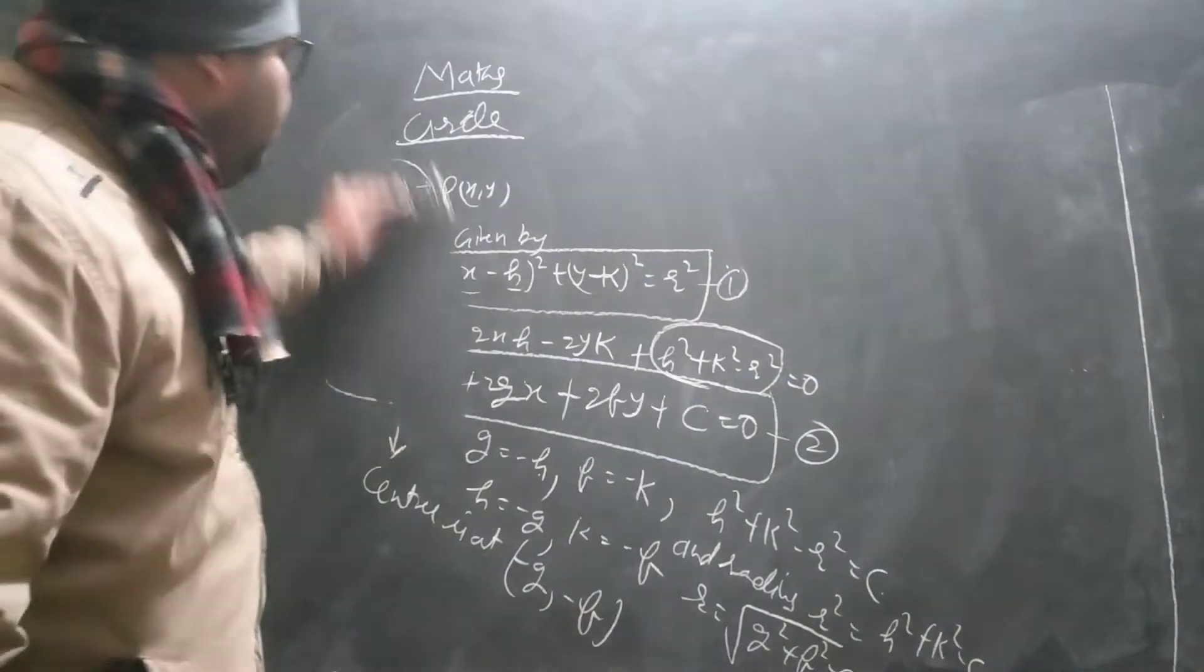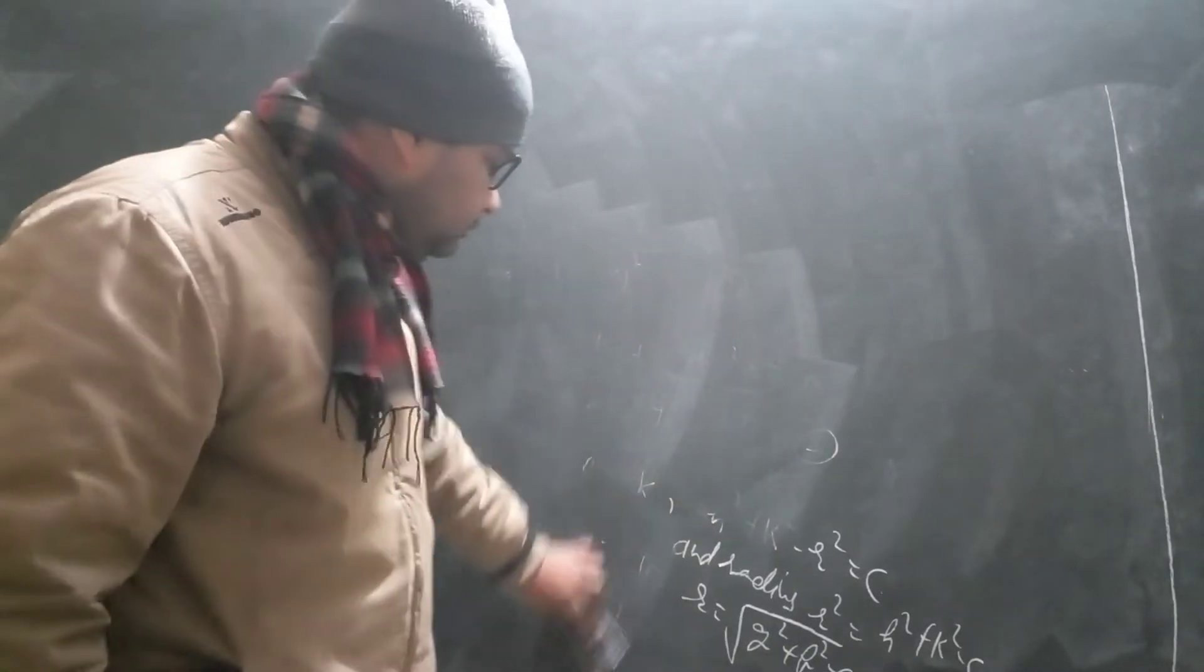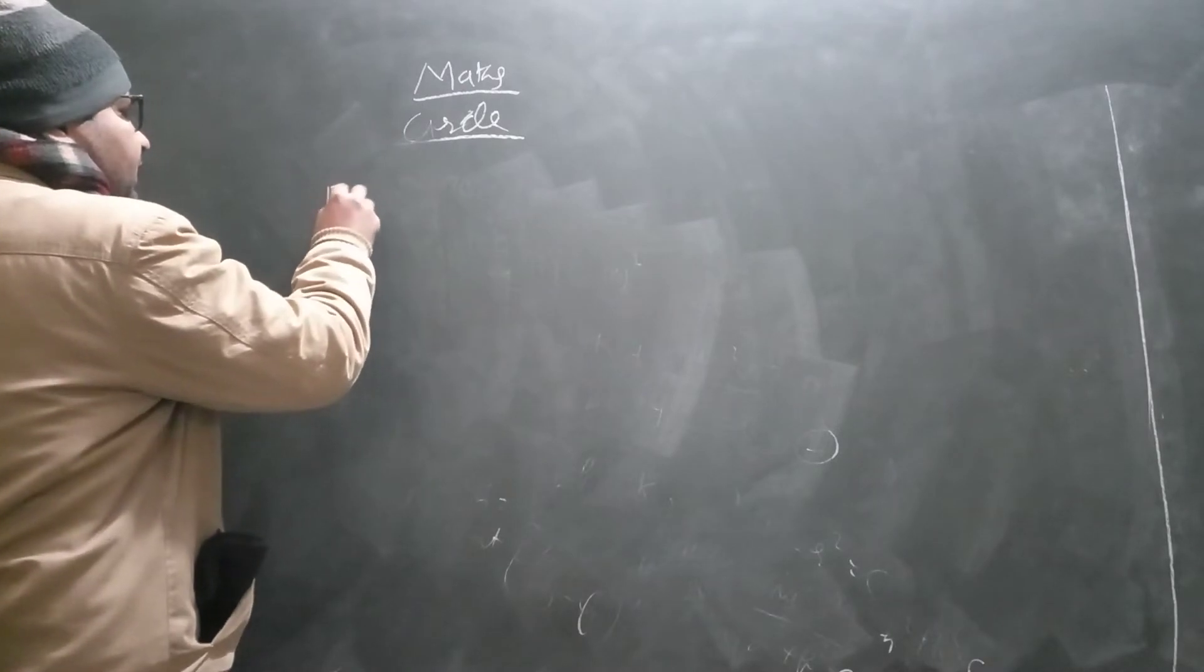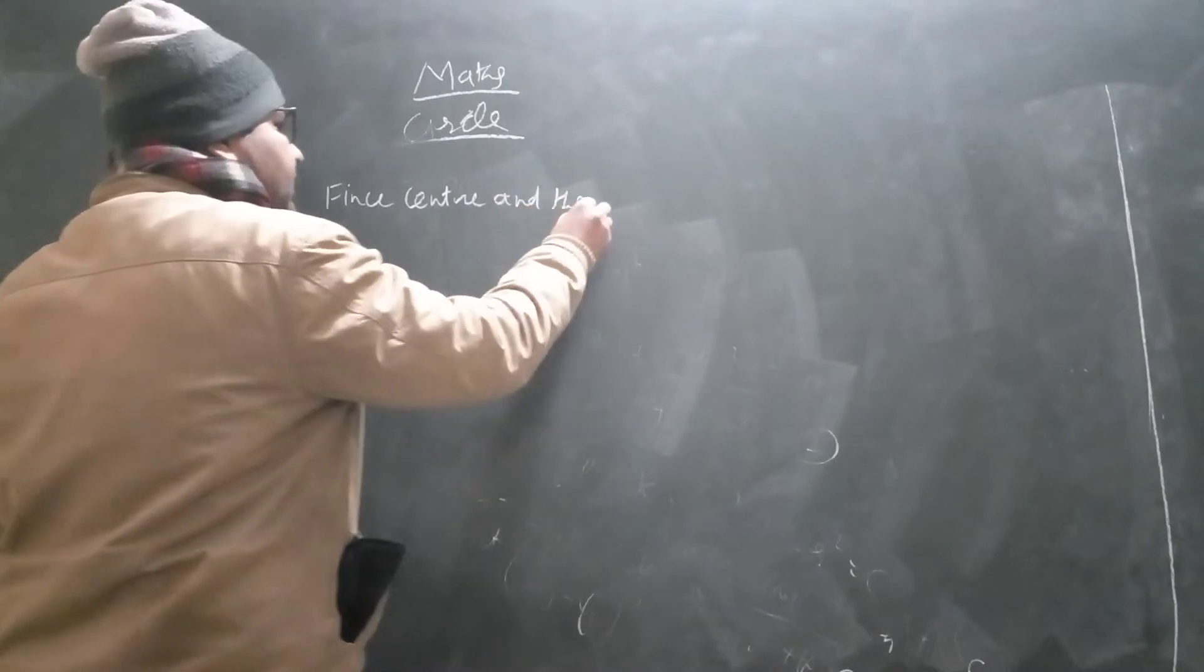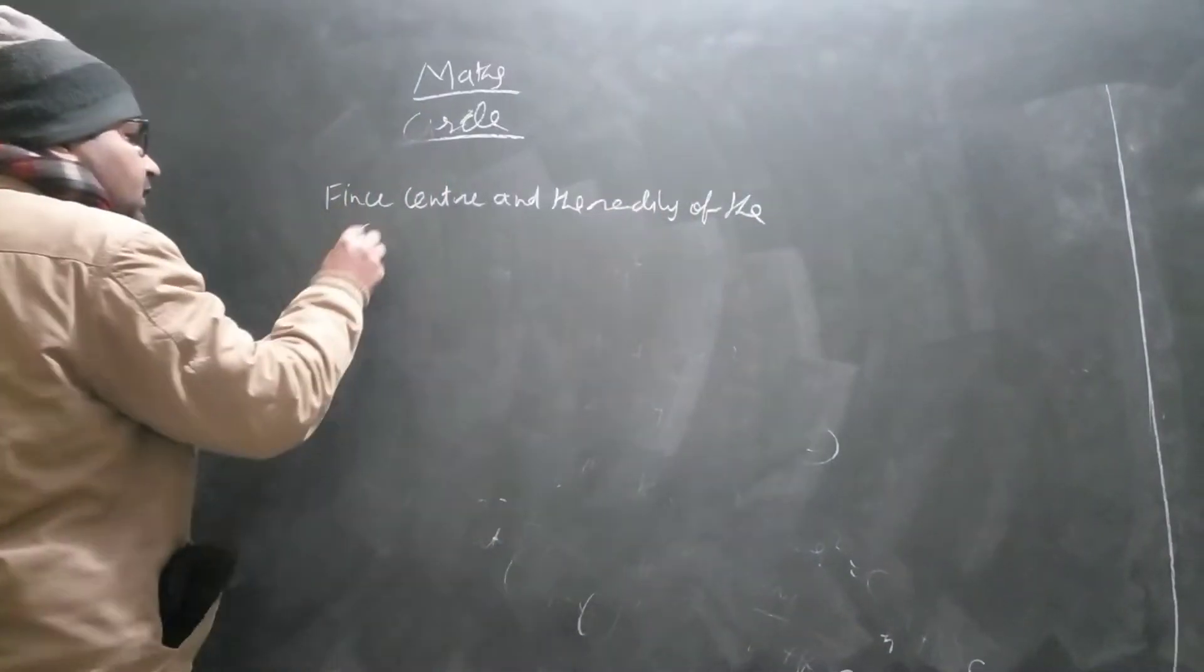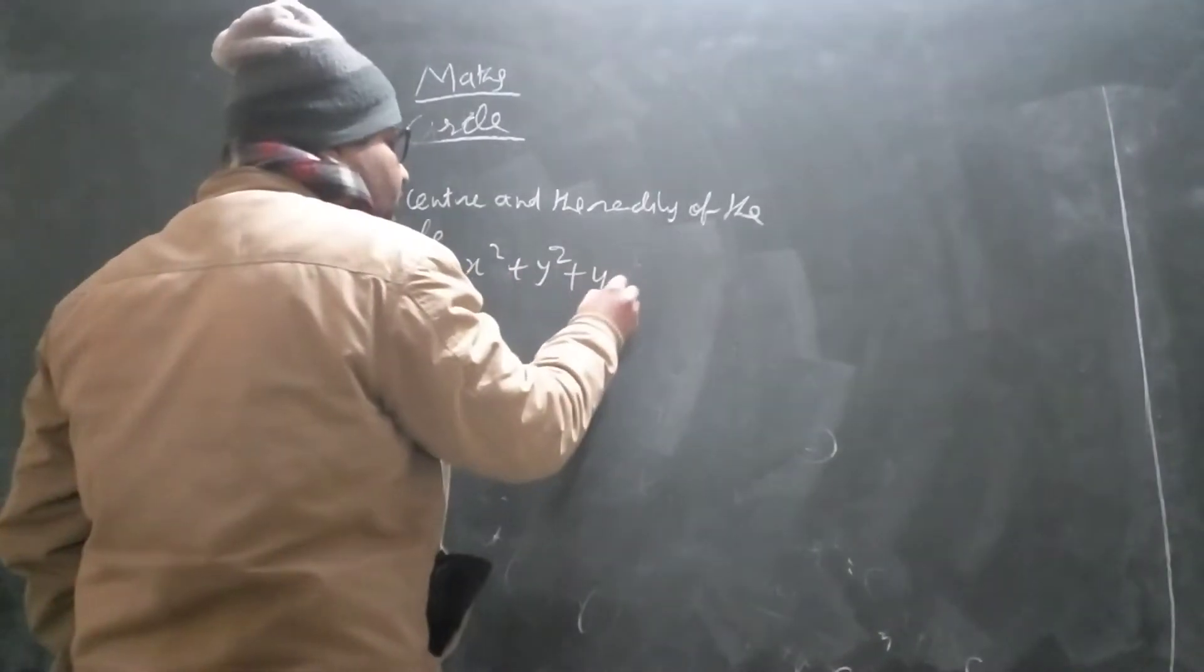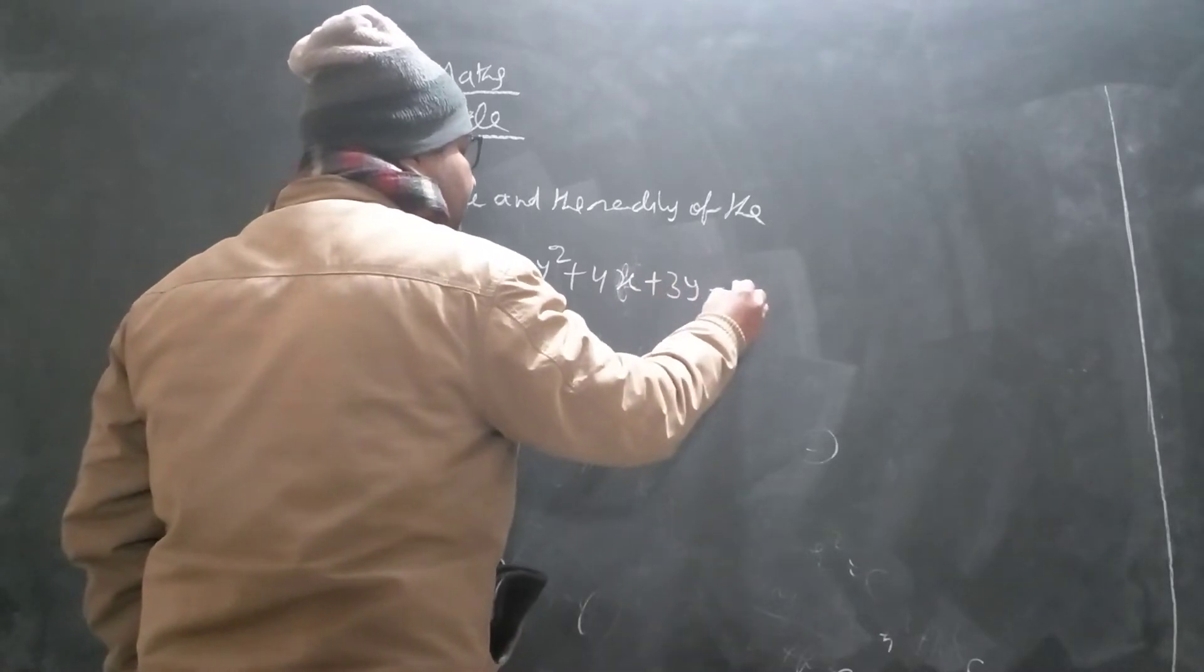Now, we have two questions. One question is when you have an equation of the circle, and we need to find its center and radius. Let me construct an example: find center and radius of the circle X square plus Y square plus 4X plus 3Y minus 8 equal to 0.